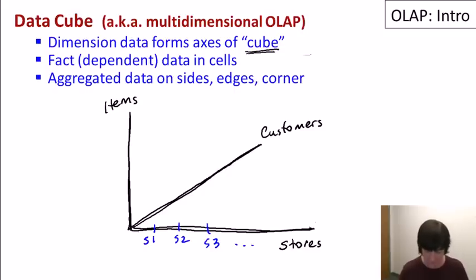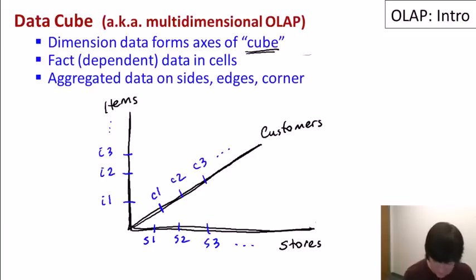And then we can think of the points along these axes as being the different elements in each of those domains or the different tuples in each of those dimension tables. So for example, in the store domain we'll have store one, store two, store three and so on. I'm not giving them any fancy names here. And so each of those is a point on that dimension. And similarly for the items we'll have item one, item two, item three and so on. And for the customers along the bottom we'll have customer one, customer two, customer three and so on.